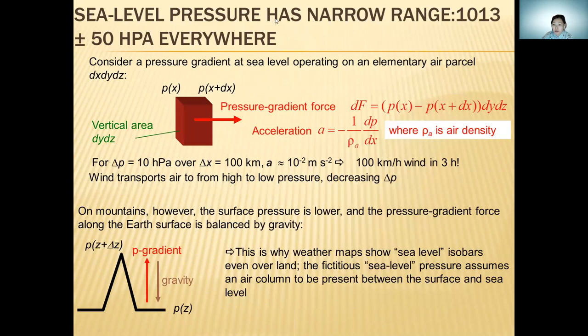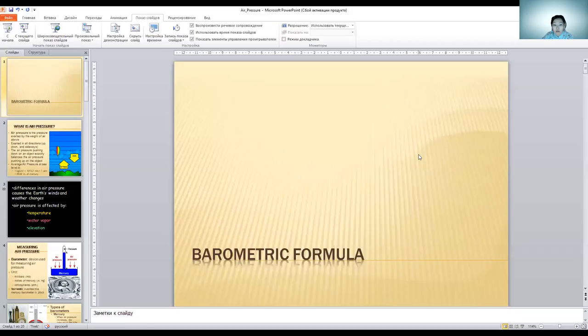Sea level pressure has a narrow range of 1013 ± 50 hPa everywhere. This shows the pressure gradient and how wind transports air from high to low pressure.